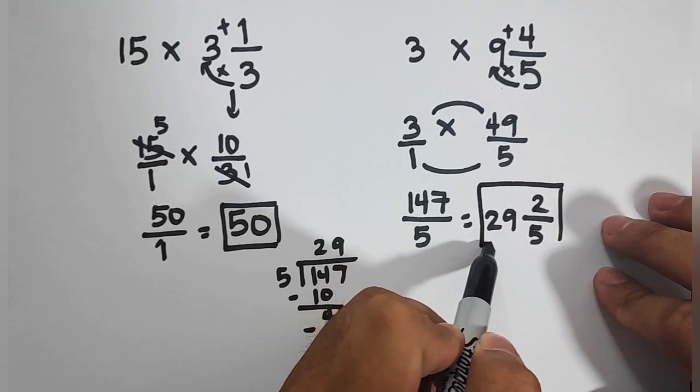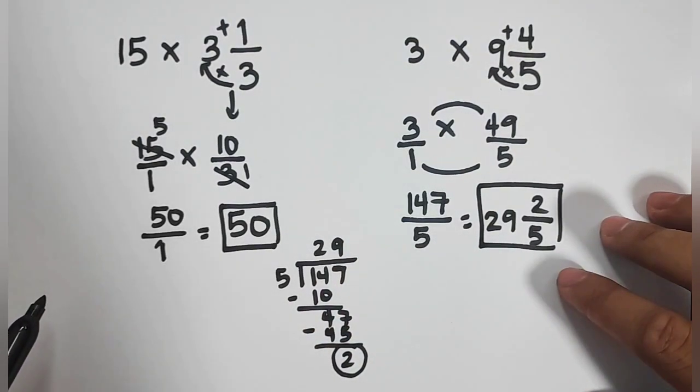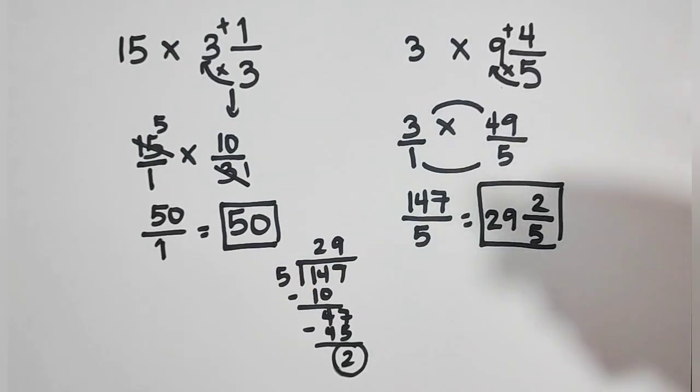the correct answer for number 3 is equal to 29 and 2 over 5. So we can also accept 147 divided by 5, or over 5, if your teacher will allow us to accept improper fraction. So I hope guys, you learned something from this video on how to multiply whole number by a mixed number.